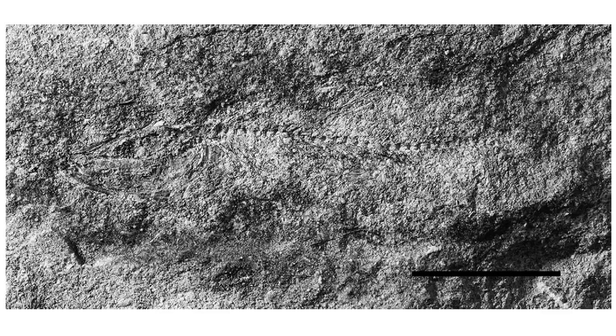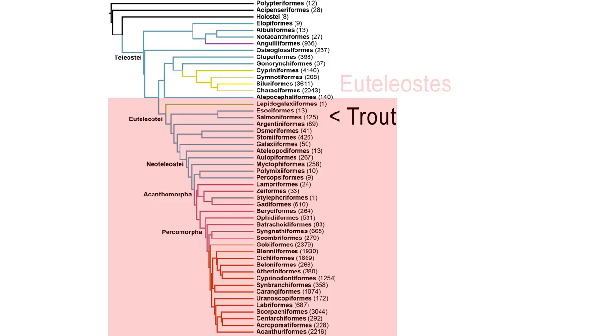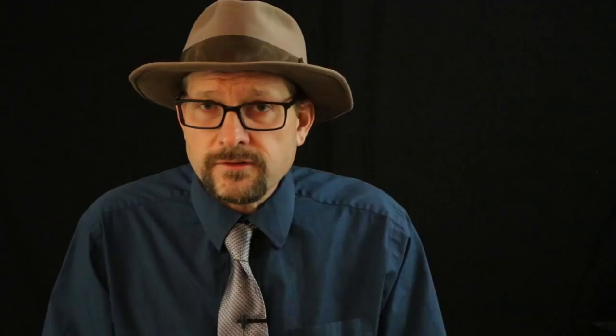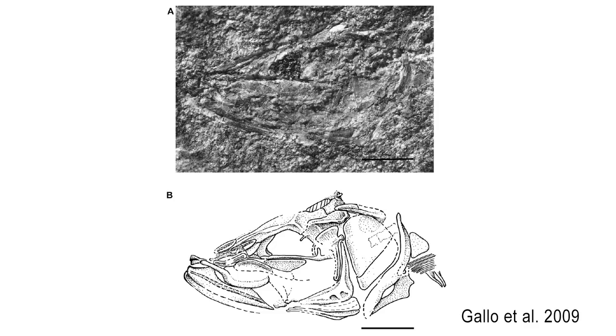One of the oldest possible ancestors is Santanaichthys from the early Cretaceous of Brazil. It is likely an early member of the Euteleosts, a diverse group of fish which arose during the early Cretaceous and are ancestral to the most diverse group of living fish today — the Euteleosts — which includes trout and numerous other common fish, like your pet goldfish. Santanaichthys does feature a slender body and elongated skull, suggesting a close affinity to modern trout, but it could also be closely related to the Clupeomorpha, the sardines and herring, which is regarded by many as the most closely related group to the trout family.